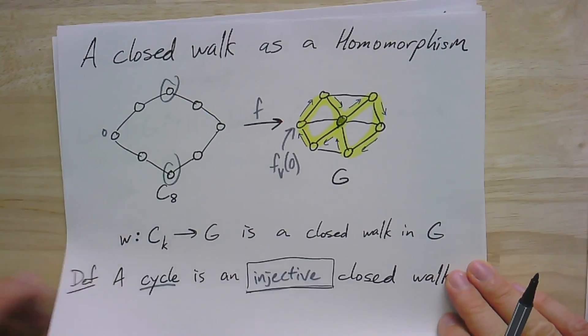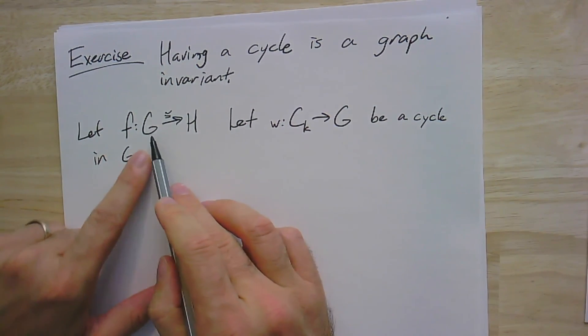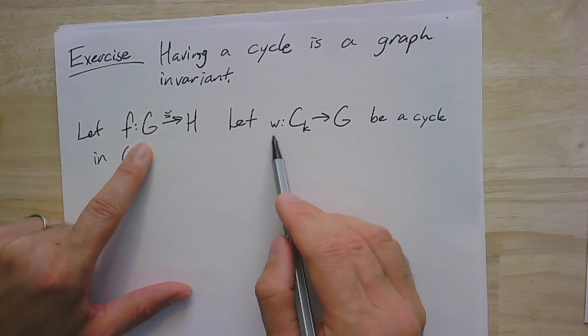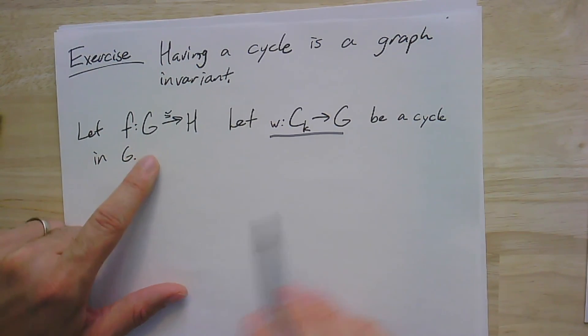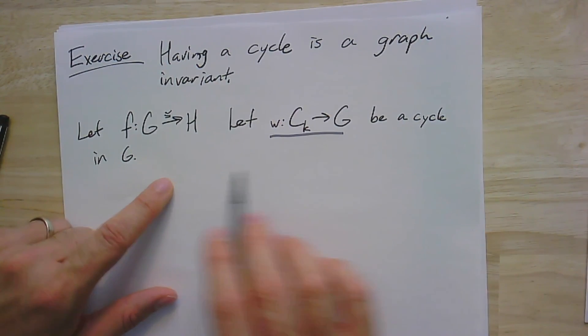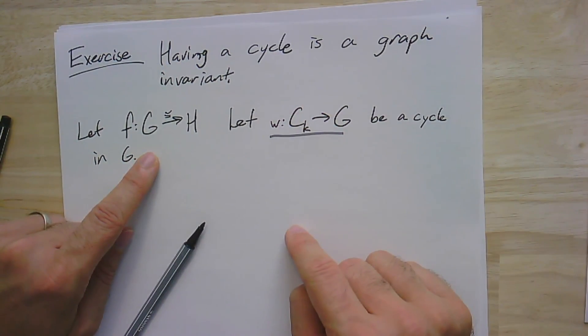Let's try to solidify this idea a little bit with a little exercise. So it's a pretty straightforward exercise. Let's just check that having a cycle is a graph invariant. So let's suppose I have a graph G and let G be isomorphic to H. So if G has a cycle, then there's some homomorphism from the cycle, the canonical cycle graph into G for some K, we don't care what the K is. So I have a cycle in G. And the claim then to say that this is invariant, I just have to show that then I also have a cycle in H.